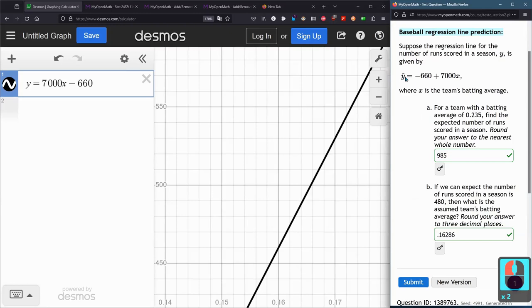If you use algebra, you could absolutely plug in the value for y and then solve for x. That's a very reasonable thing to do. For me, I'd add 660 to both sides and then divide by 7,000. Totally okay way to get part B.